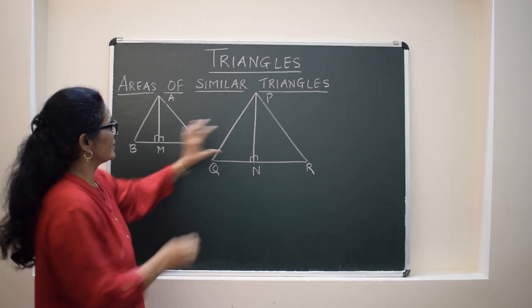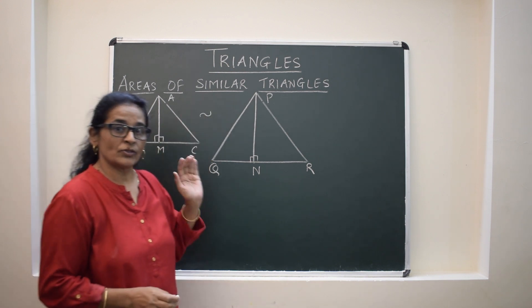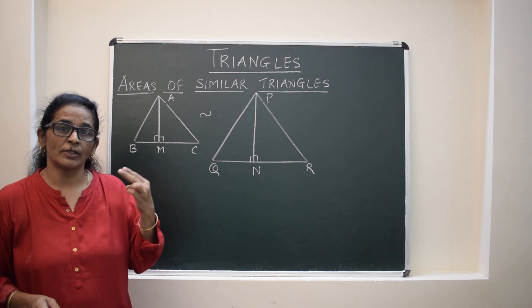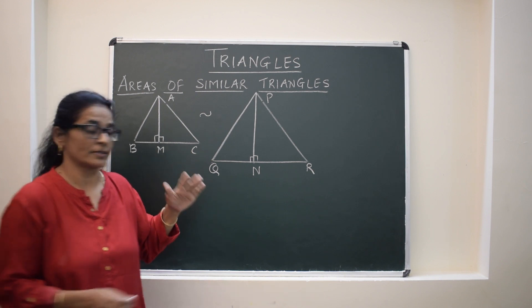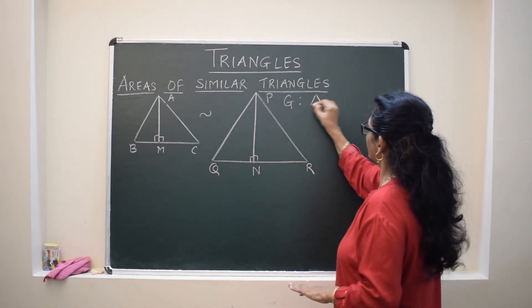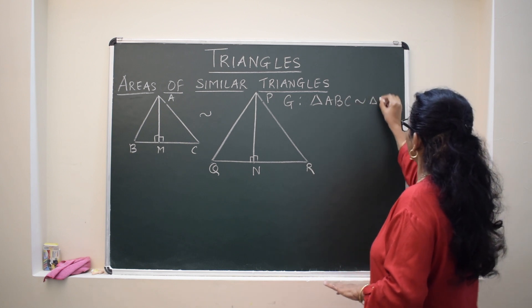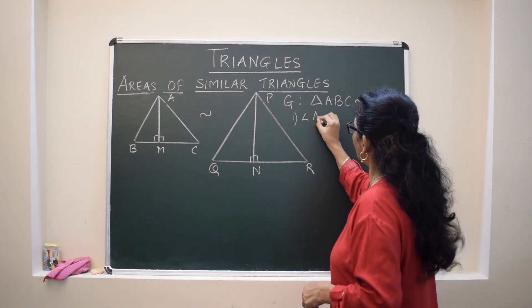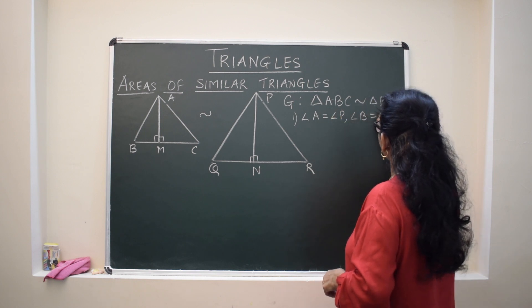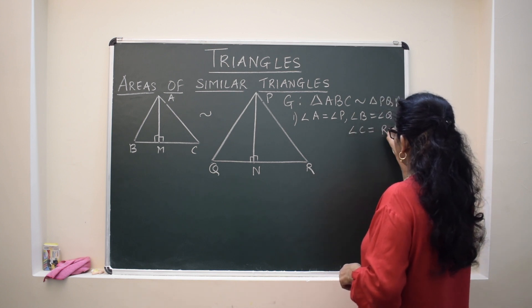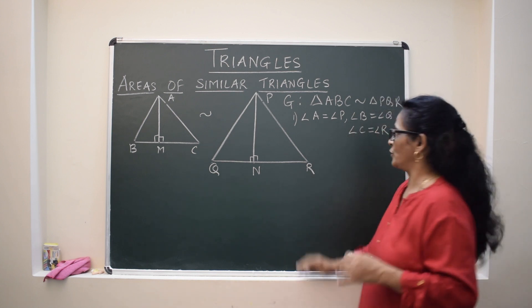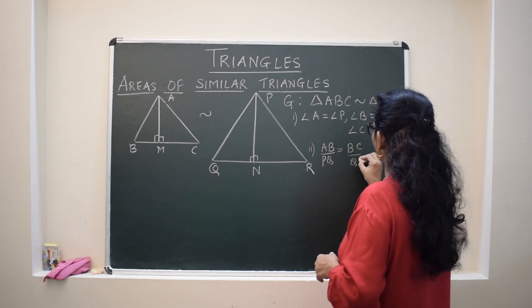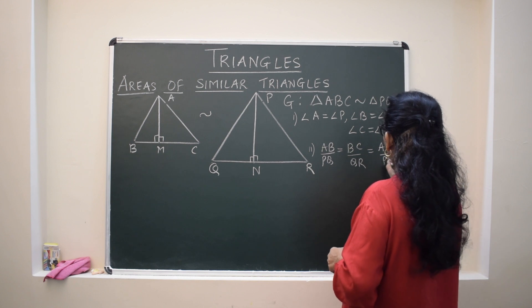It is given that these two triangles are similar. When two triangles are similar, there are two facts: their corresponding angles are equal and their corresponding sides are in the same ratio. So given is triangle ABC similar to triangle PQR, and this gives us AB/PQ = BC/QR = AC/PR.